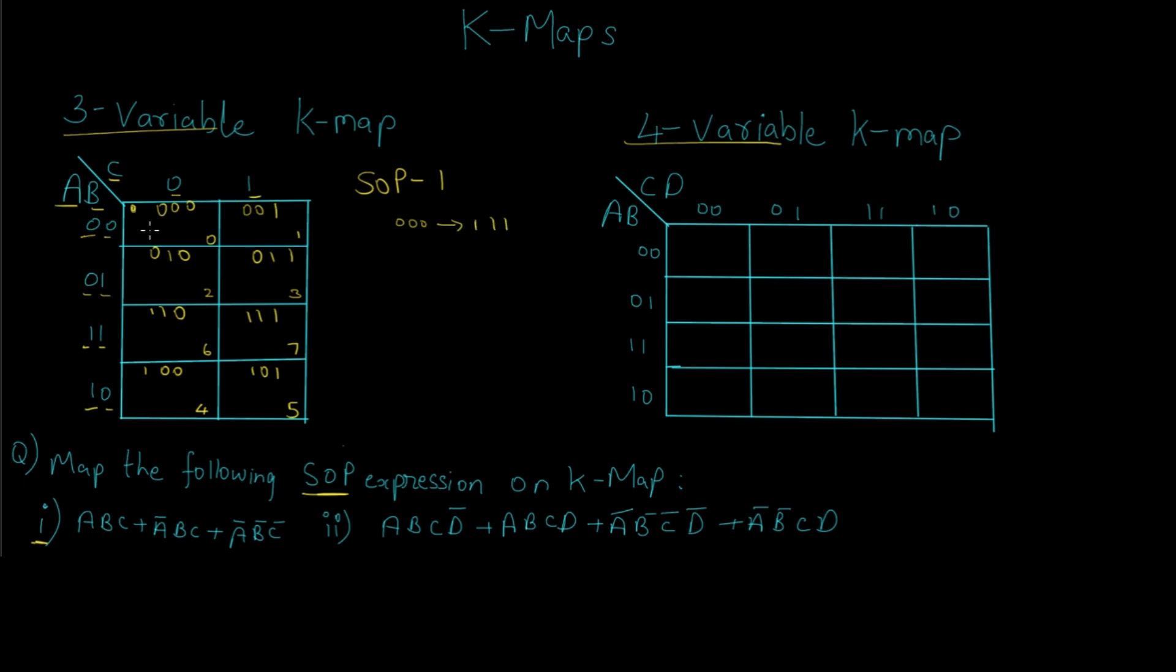We know SOP is associated with the number 1, that is all the variables having 0 value need to be complemented and converted to 111. So the value of this cell would be A complement, B complement, and C complement since all the variable values are 0. If you have missed the part where we discuss SOP and POS, we have a separate video wherein we understand its concept and convert different Boolean algebra expressions into SOP and POS forms. You can check it out as well.